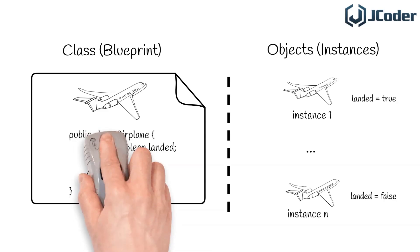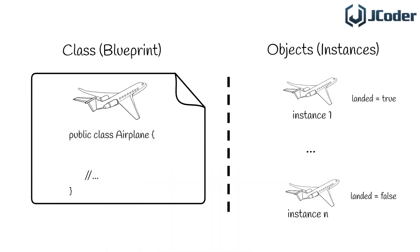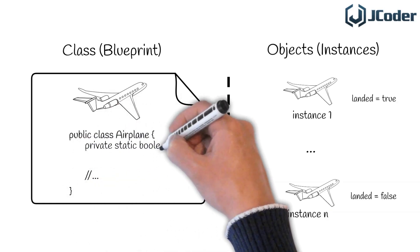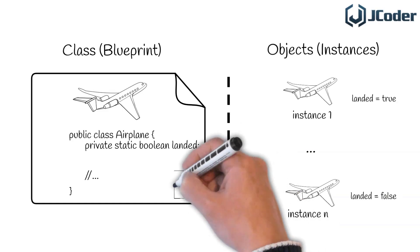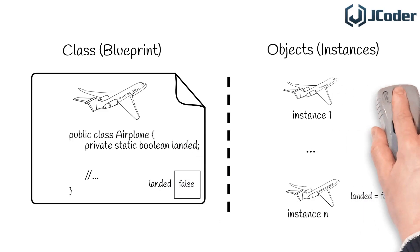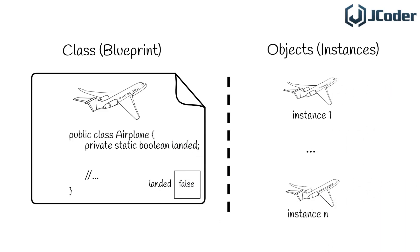Now let's assume that we added the keyword static to our landed variable. By adding that keyword, we are telling the compiler that the variable belongs to the blueprint itself. This means that there is a single landed variable — it belongs to the class itself. It doesn't matter how many airplane objects we create. This also means that the landed variables that were created for each object no longer exist.